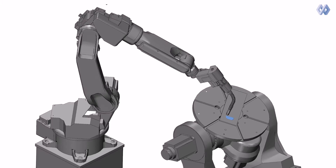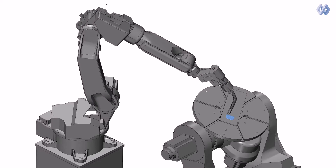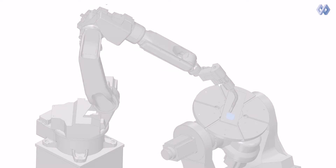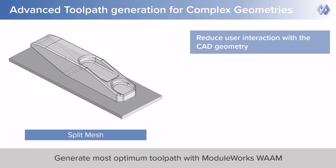To meet the industry requirements and to support wider adoption of this technology, let us look at some of the key highlights of this solution. ModuleWorks WAM provides many geometry processing functionalities for rapid toolpath generation. Features like split mesh enhance flexibility in path planning and reduce linking motions.